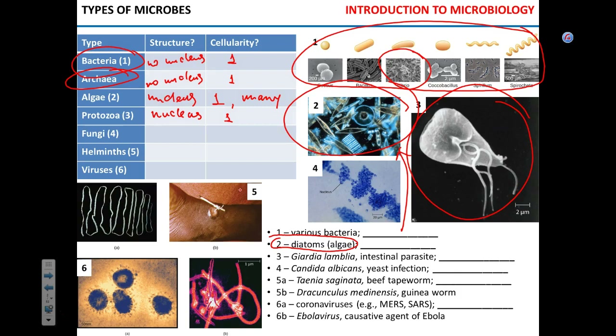Can fungi be multicellular? Yes — you go to the store and buy mushrooms; those are fungi. Mushrooms are just big parts of them. So fungi can be multicellular. Can they be unicellular? Sure — that's the yeast Candida albicans, which causes candidiasis — the vaginal infection or thrush, an infection of the upper respiratory tract. It's unicellular fungi. And of course they are nucleated.